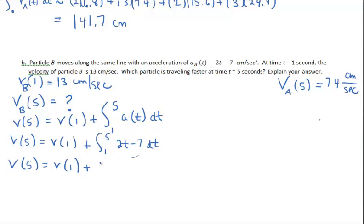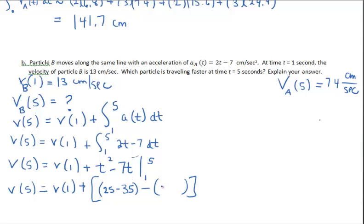The anti-derivative here is t squared minus 7t evaluated from 1 to 5. Evaluate at 5, so 25 minus 35, evaluate both terms at 1, 1 minus 7. And now I'll replace v sub 1 with the value 13. So 13 plus negative 10 minus negative 6.